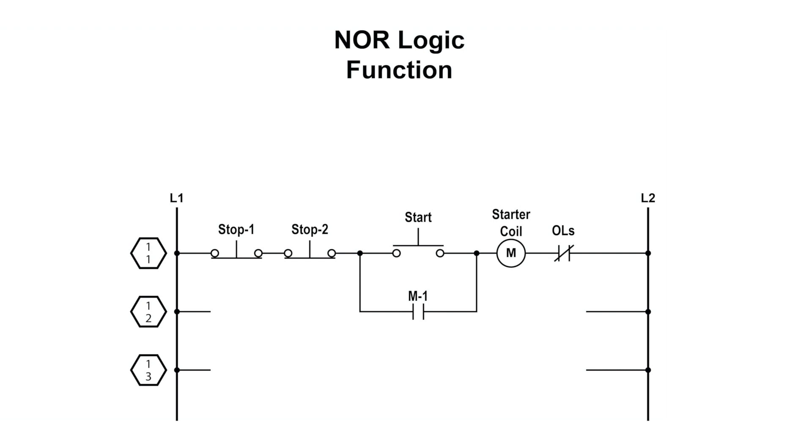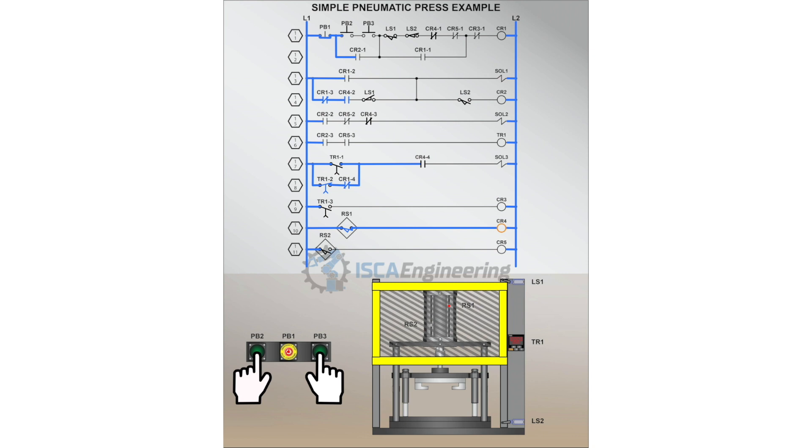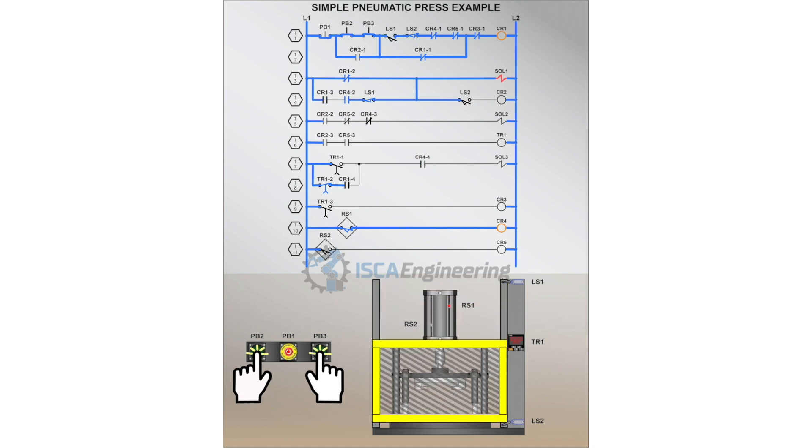Control circuits often require more than one type of logic function when more complex decisions need to be made. The circuit provided shows the operation of a simple pneumatic press, which uses several different types of logic functions.